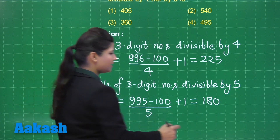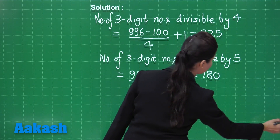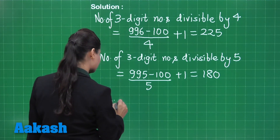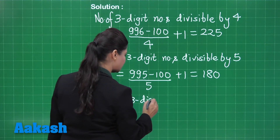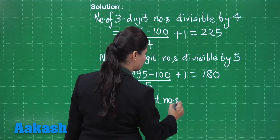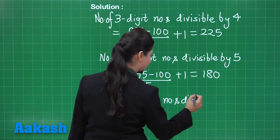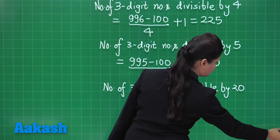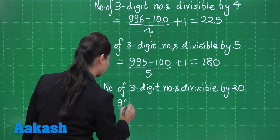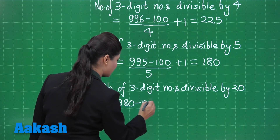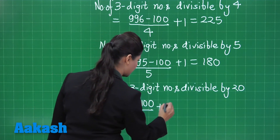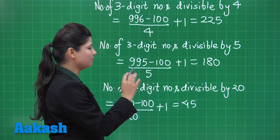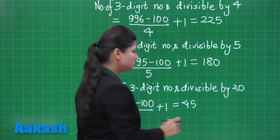Take the difference, divide by 4, and add 1 to it. This simplifies to 225. So there are 225 three-digit numbers divisible by 4. Next, the largest three-digit number divisible by 5 is 995 and the smallest is 100; dividing by 5 and adding 1 gives 180 such numbers.